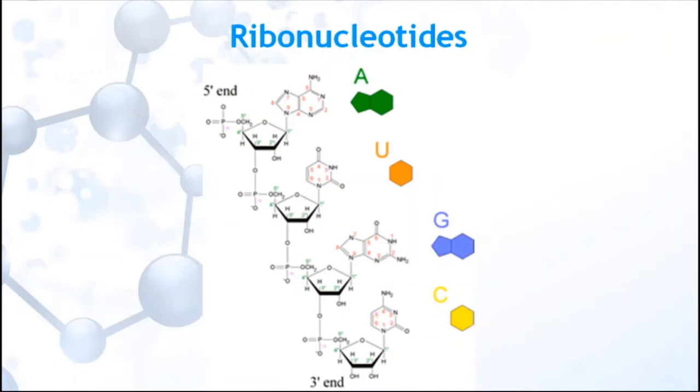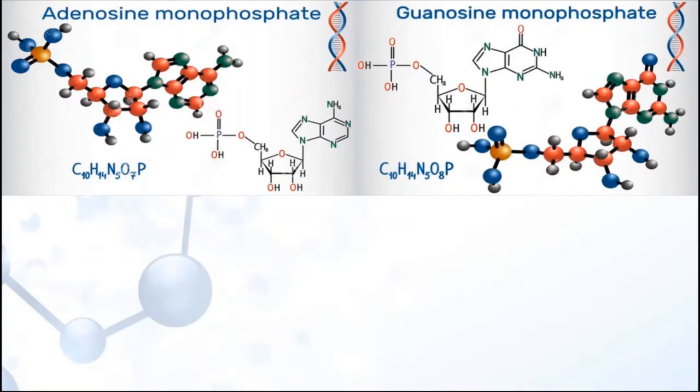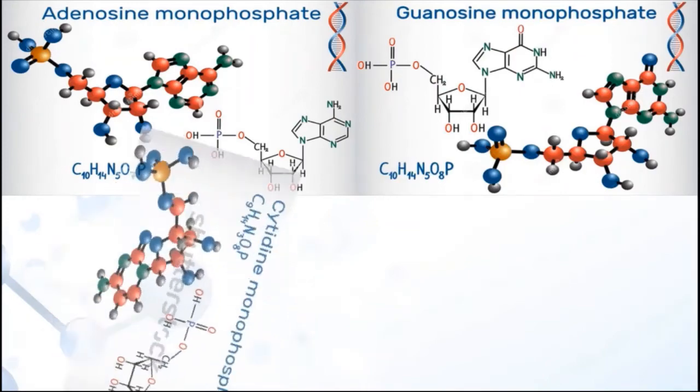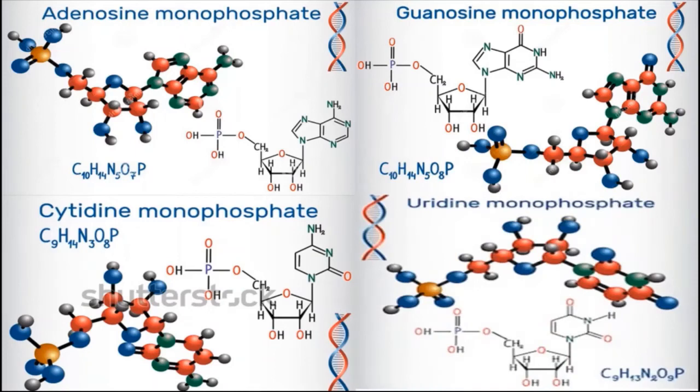Ribonucleotides are the basic building blocks of RNA strands. Four types of ribonucleotides like adenosine monophosphate, guanosine monophosphate, cytidine monophosphate, and uridine monophosphate are present in the cell.